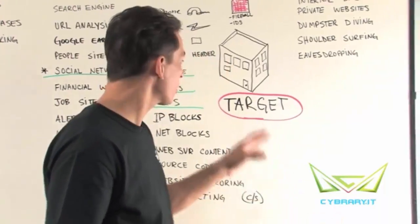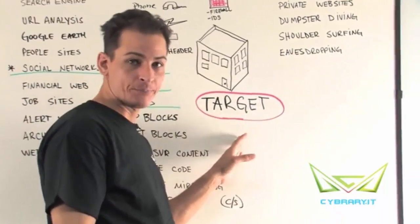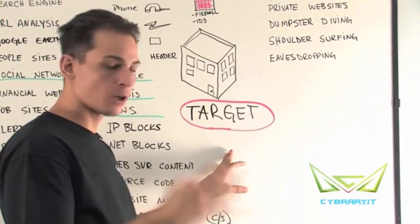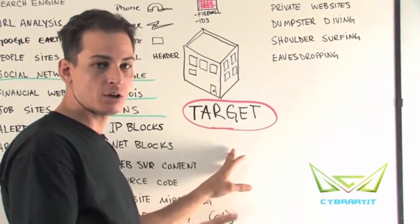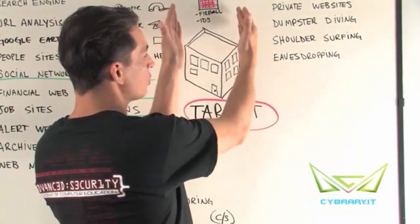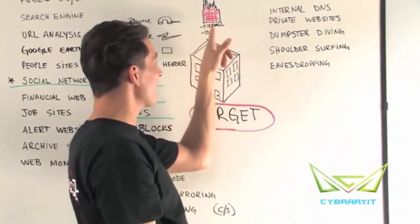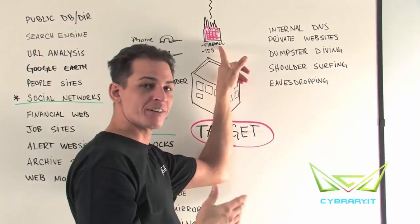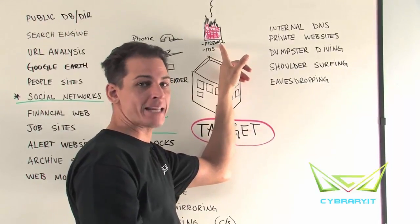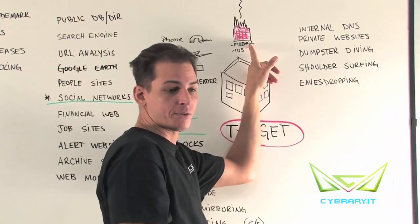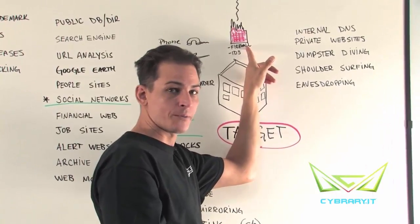Ultimately, we're going to have a target — it could be a company, it could be a person. This is also the point at which they have firewalls and intrusion detection systems, or any sort of preventative mechanisms that would be in place to prevent information from being disclosed.